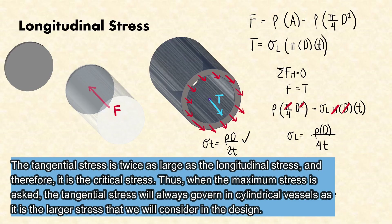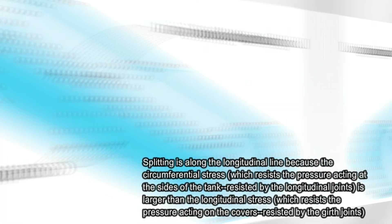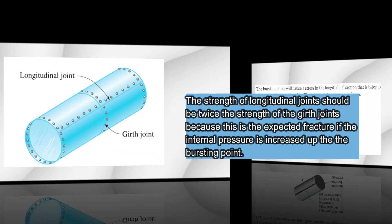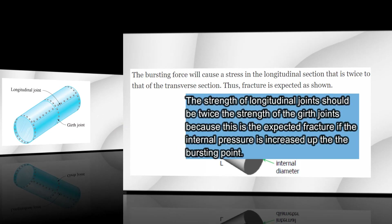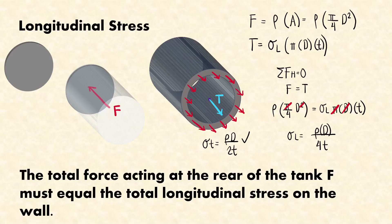It follows that if the pressure in a cylinder is raised to the bursting point, the vessel will split along a longitudinal line. Thus, when a cylindrical tank is manufactured from curved sheets that are riveted together, the strength of the longitudinal joints should be twice the strength of the girth joints.